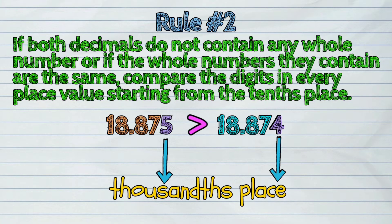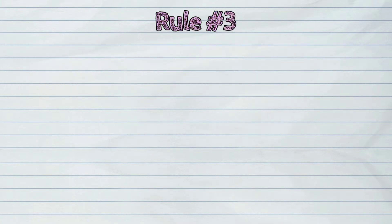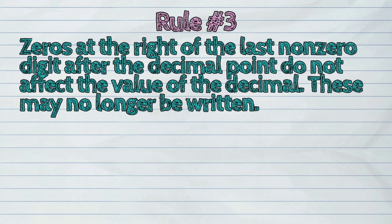Now, let us proceed to the third rule. Zeroes at the right of the last non-zero digit after the decimal point do not affect the value of the decimal. This may no longer be written.